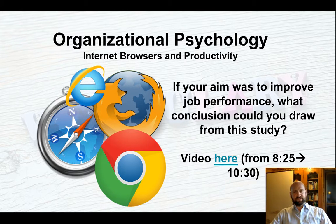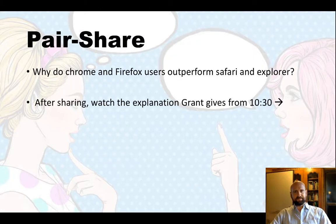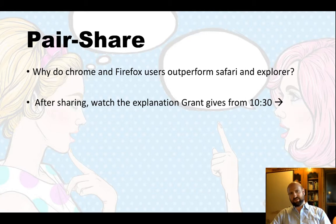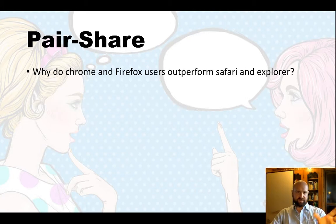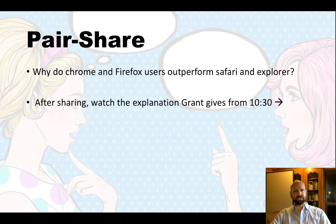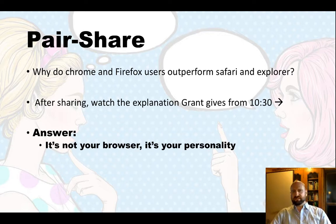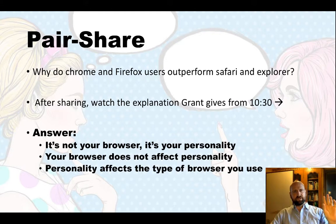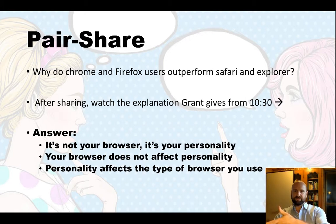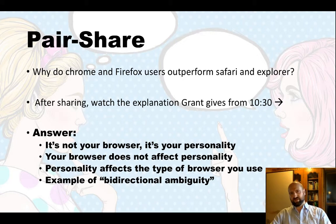There's a really interesting TED Talk — just watch the two minutes here. He talks about the difference in performance between people who use different types of web browsers, and what they find is that Chrome and Firefox outperform the others. See if students can explain why. After sharing their explanations, you can look at the explanation Grant gives in the TED Talk: it's not the browser that affects personality or job performance — it's that the type of person who works hard and has high job performance is the kind of person who chooses those browsers. This is a good example of bi-directional ambiguity, and a good time to explain that concept.